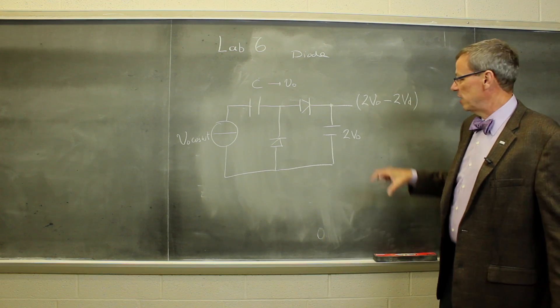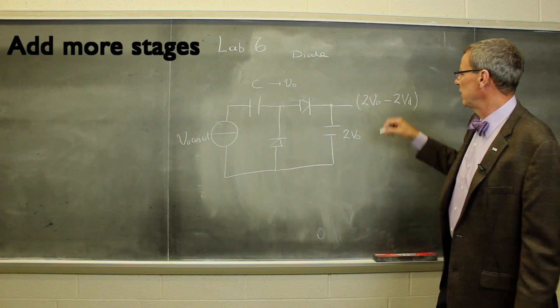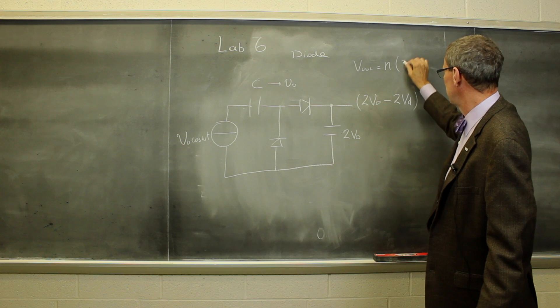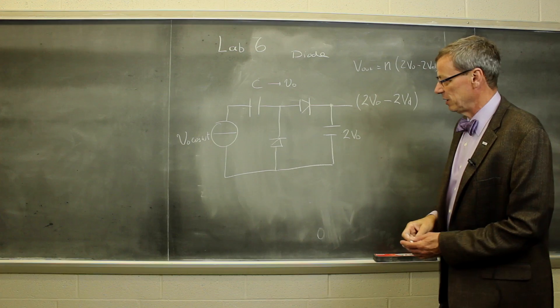We're going to keep building this. This is one stage. We're going to add two more stages like this. So we're going to get something, a multiplier, which is going to be three stages in, times 2V0 minus 2VD, just by continuing this.